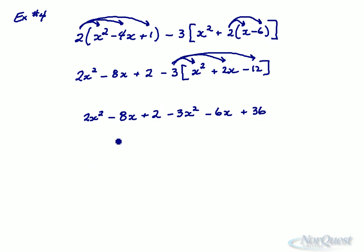Collect like terms, 2x² - 3x² gives me -x², -8 and -6 to give me -14x, 36 and 2 plus 38.